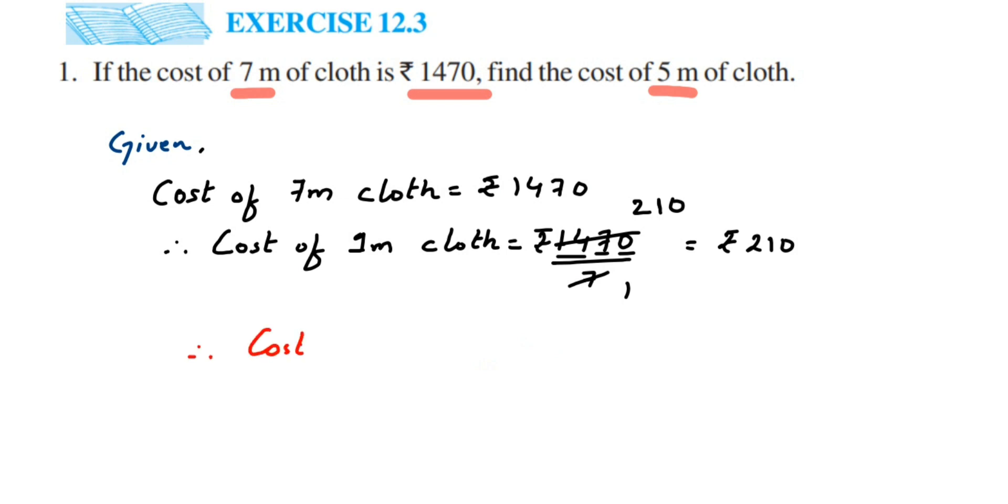Cost of 5 meters cloth will be equal to 5 times rupees 210. When you multiply it, we get rupees 1050. This is the cost of 5 meters of cloth.